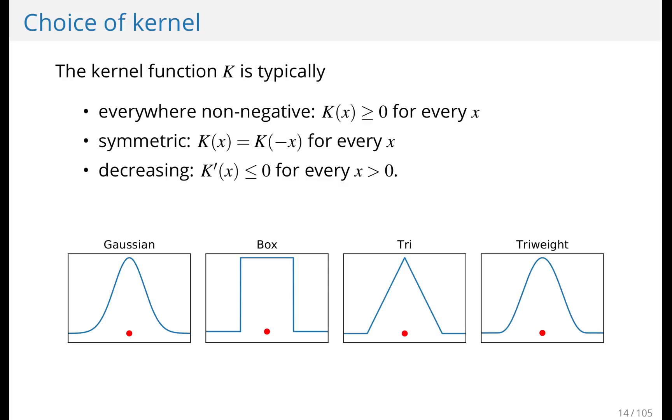It doesn't have to have these three properties. But typically in the simple straightforward cases, this is what you demand from a kernel function. A kernel function can be of bounded support or not. In this example, the Gaussian to the left does not have bounded support because it never really goes down to zero. It goes infinitely close to zero as x gets infinitely larger or smaller, but it never really reaches zero. This is in contrast to the box kernel, the triangular kernel, and the tri-weight kernel, which is zero outside of a domain.